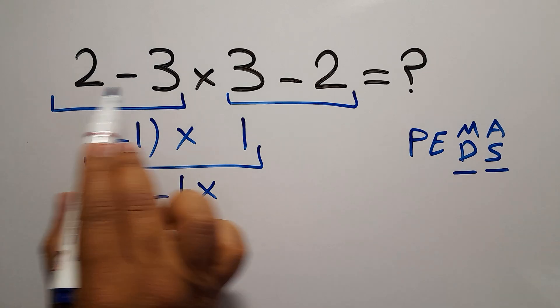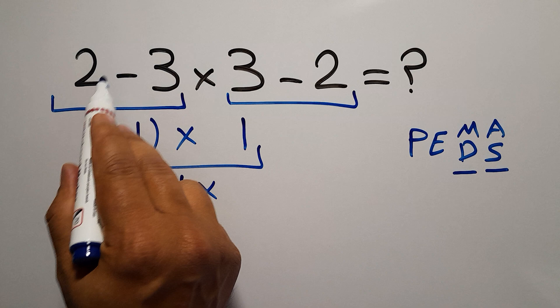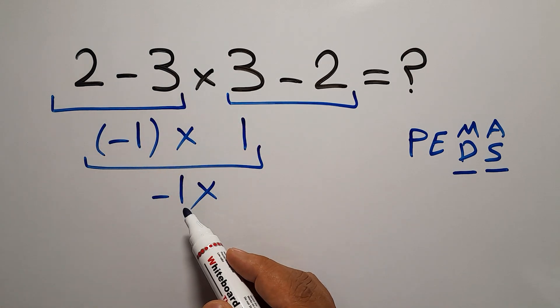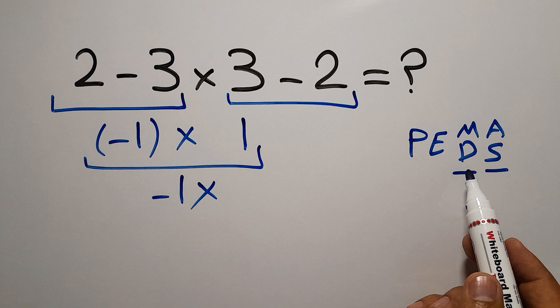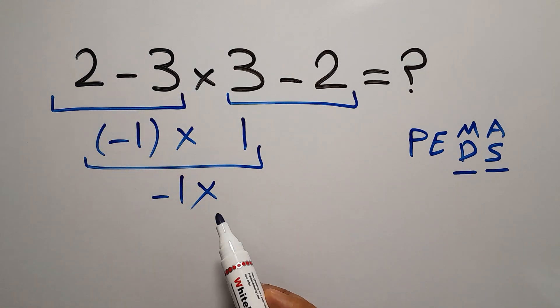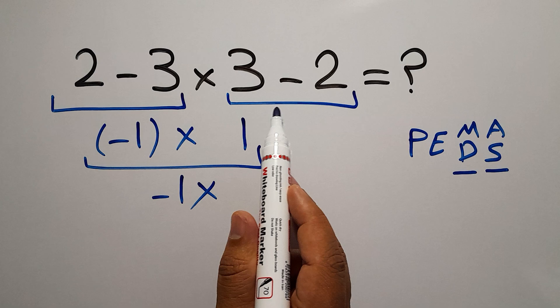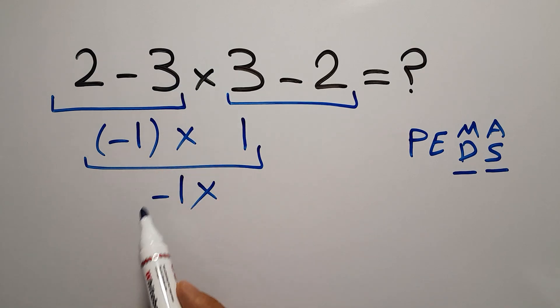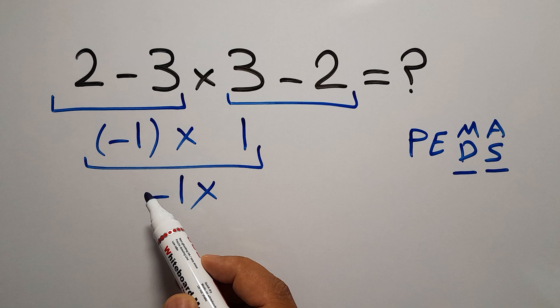Here, in this expression, we have two subtractions and one multiplication. In PEMDAS, multiplication comes before subtraction. So, here, first we have to do this multiplication, not this subtraction.